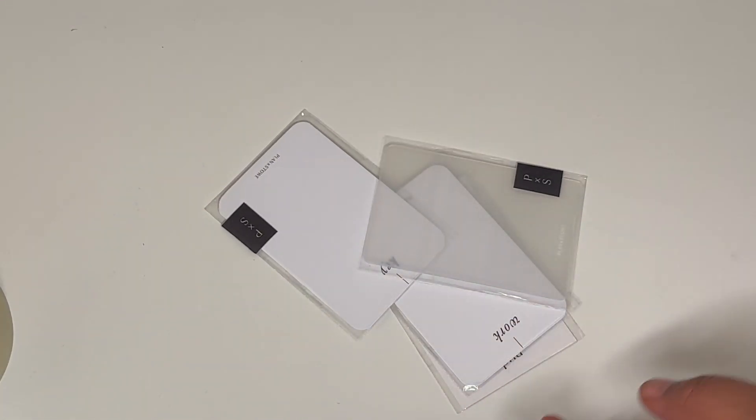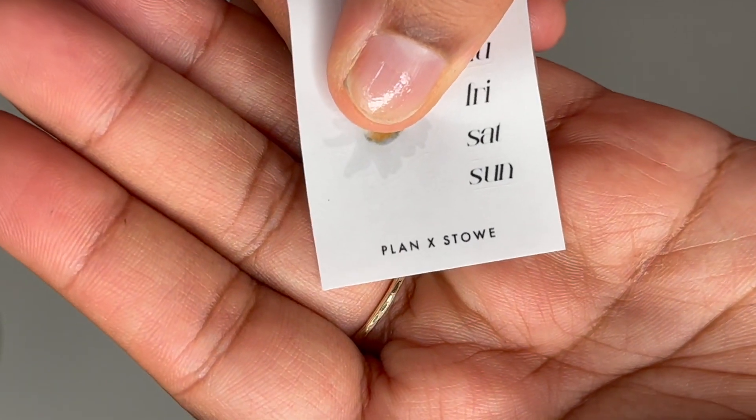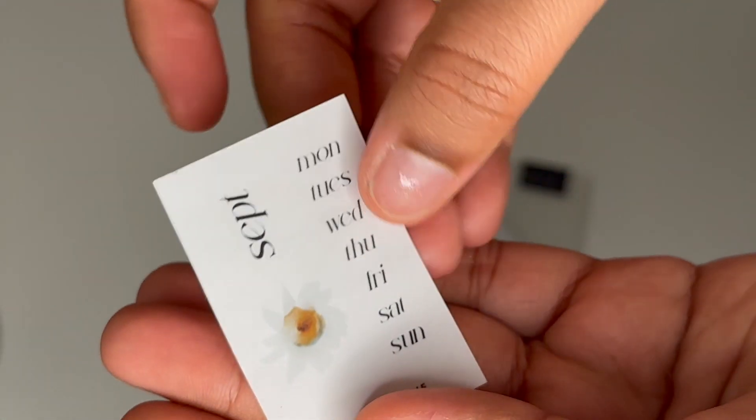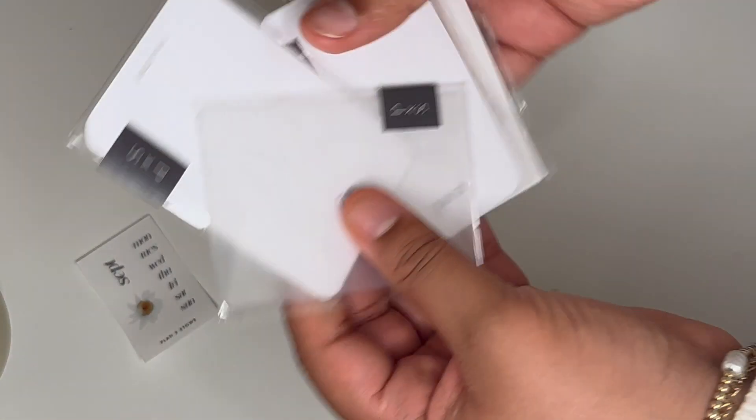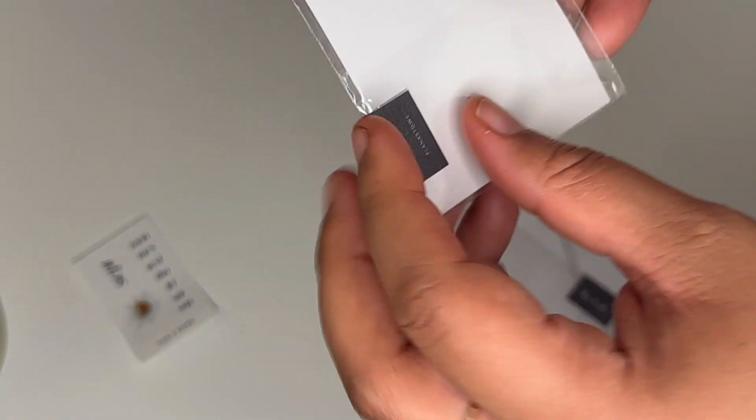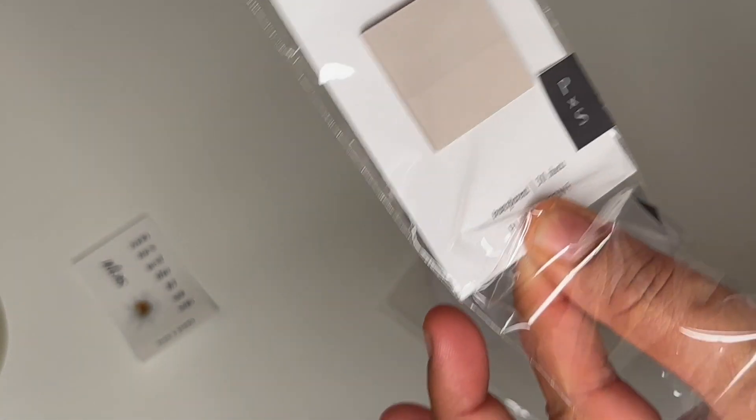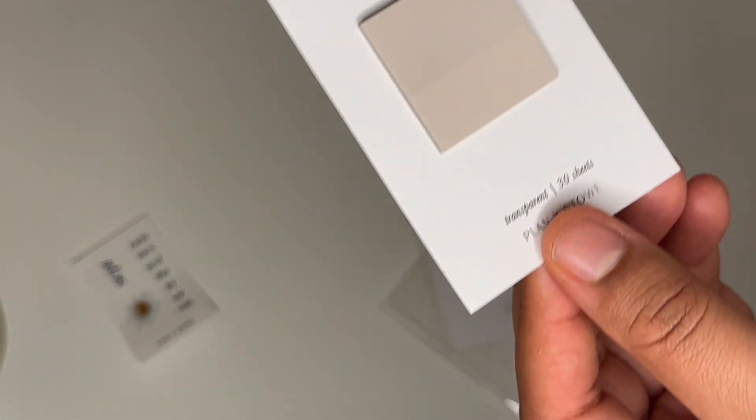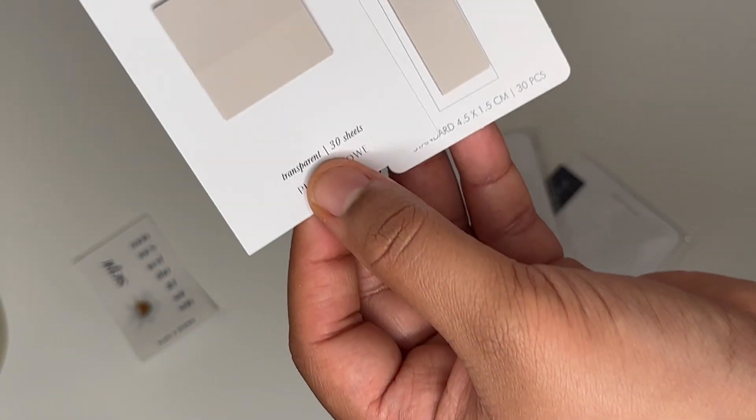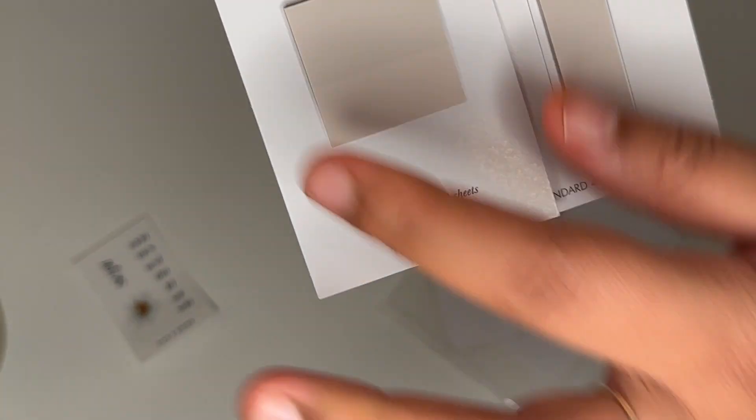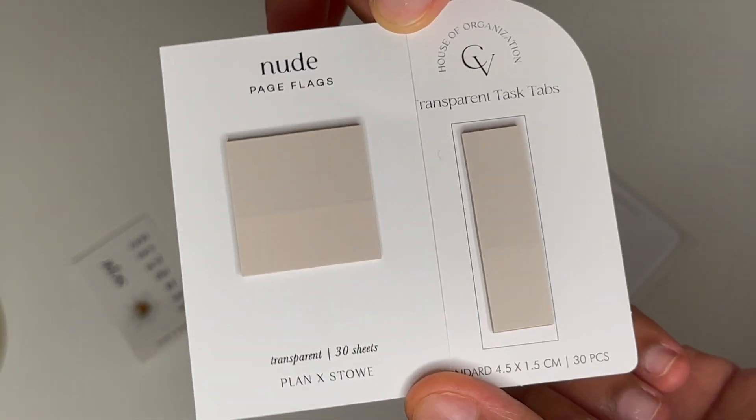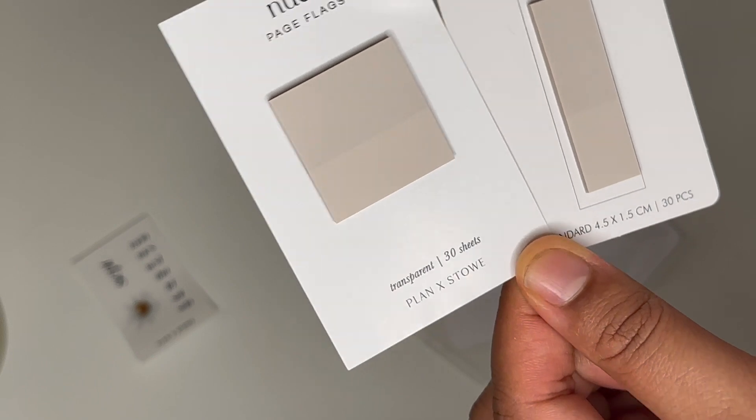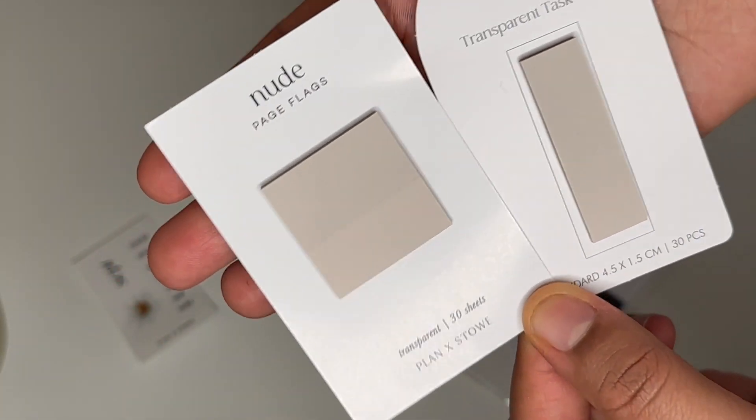Those are my favorite currently and then I ordered a bunch of things from this brand called Plan X Sto. I'll just show you the freebie because it has their full name. This was their freebie, it was like a September one with the days of the week and a little flower. I got a bunch of stuff from them because I wanted to create some task cards. The first one that I got were these nude page flags. They're transparent and they're like literally the same color as this. I love these and these are great for the monthly overview. These are called nude and they have 30 sheets.